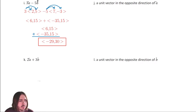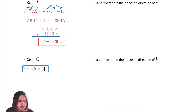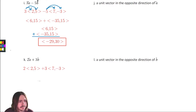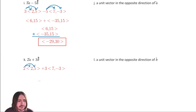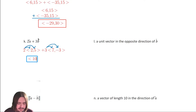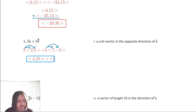Letter K works out similarly, which is why I'm doing them back to back. We've got two times two comma five, plus three times seven comma negative three. Distributing: two times two is four, two times five is ten — giving four comma ten. Three times seven is twenty-one, three times negative three is negative nine — giving twenty-one comma negative nine.